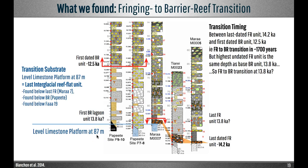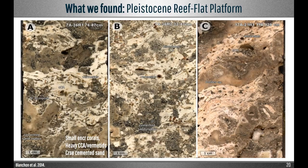What is at 87m to explain why the transition would occur there? The substrate at 87m consists of a level limestone platform — a reef flat unit with an age corresponding to the last interglacial. In other words, this platform is the reef flat that developed during the last highstand 125,000 years ago, and since that time it has subsided at least 87m. In core, the last interglacial reef flat shows small encrusting corals, large amounts of crustose coralline algae intergrown with vermetids — some only found in the intertidal zone — and voids filled with well-sorted coarse sand, all typical of modern reef flat units.